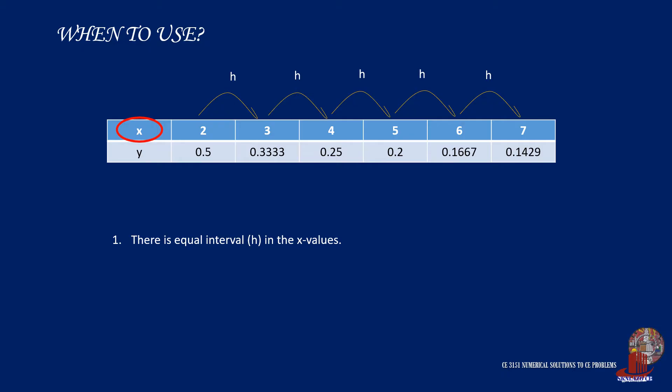The second condition considers the location of the required value, and to use the forward Gregory-Newton, it should fall under the half below the mid-value. For example, we can use forward Gregory-Newton if we are looking for 2.5, or 3.2, or even 4.9, as long as these points fall before the midline.